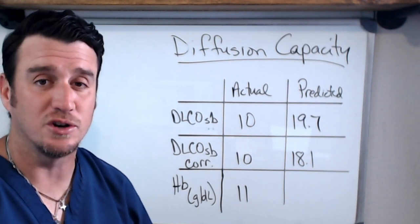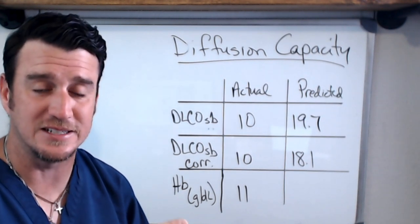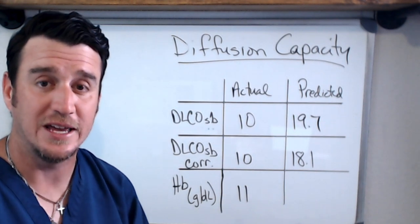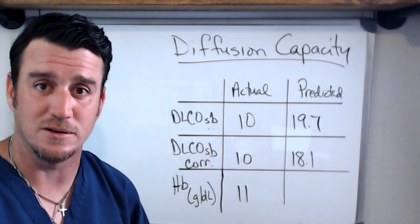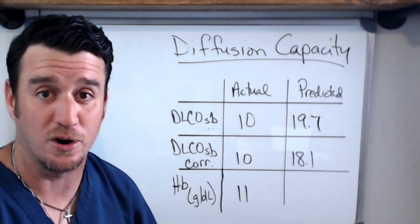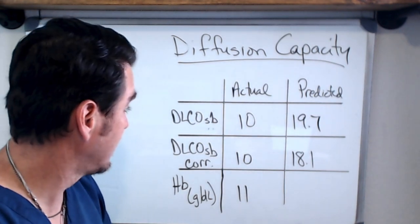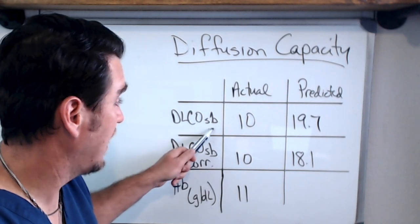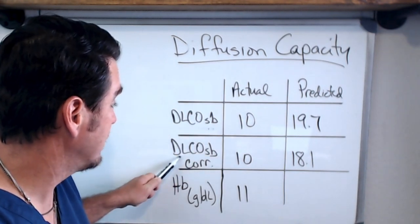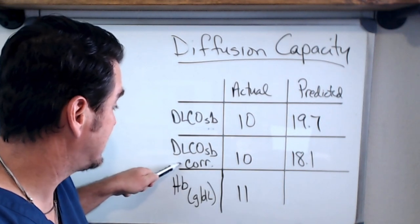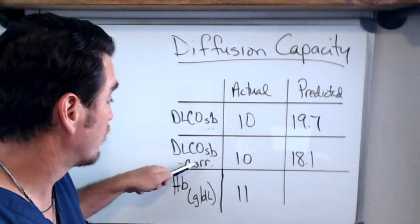Because if it was corrected for the increased hemoglobin then it might be an abnormal study. So you want to make sure that this test is always corrected for hemoglobin because that affects the diffusion of gas. That's what you see on the board right here. You see very clearly we have DLCO single breath, this first one is not corrected, the second one is corrected, the CORR is corrected for the hemoglobin.